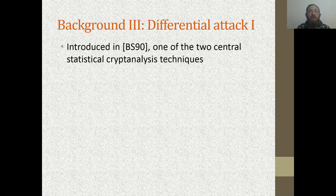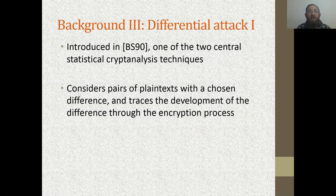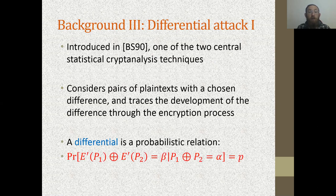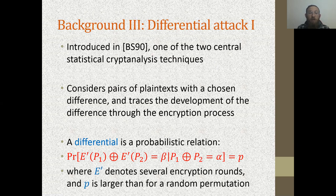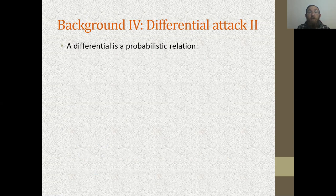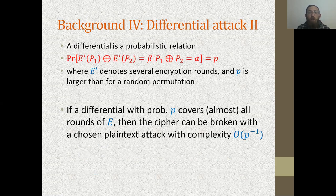Probably the best known cryptanalytic attack is the differential attack, introduced by Biham and Shamir 30 years ago. In this attack, we consider pairs of plaintexts with a chosen difference and trace the development of differences through the encryption process. The main notion is a differential: a probabilistic relation stating that if we take two plaintexts p1 and p2 with difference alpha, then the encrypted values E(p1) and E(p2) differ by beta with some probability p. If we find such a differential covering all or almost all rounds, then usually the cipher can be broken with complexity 1/p.